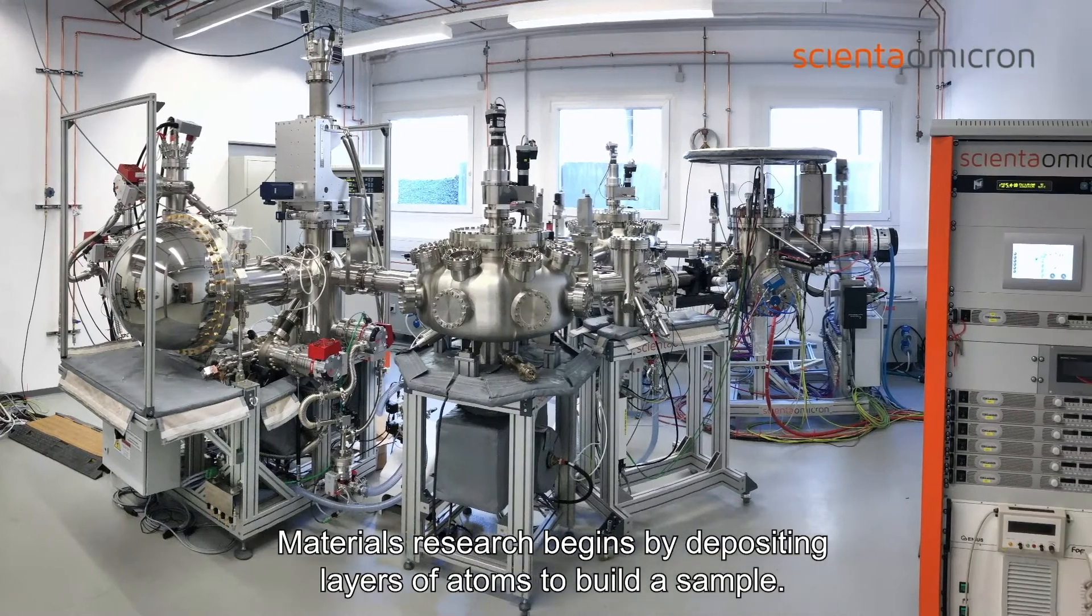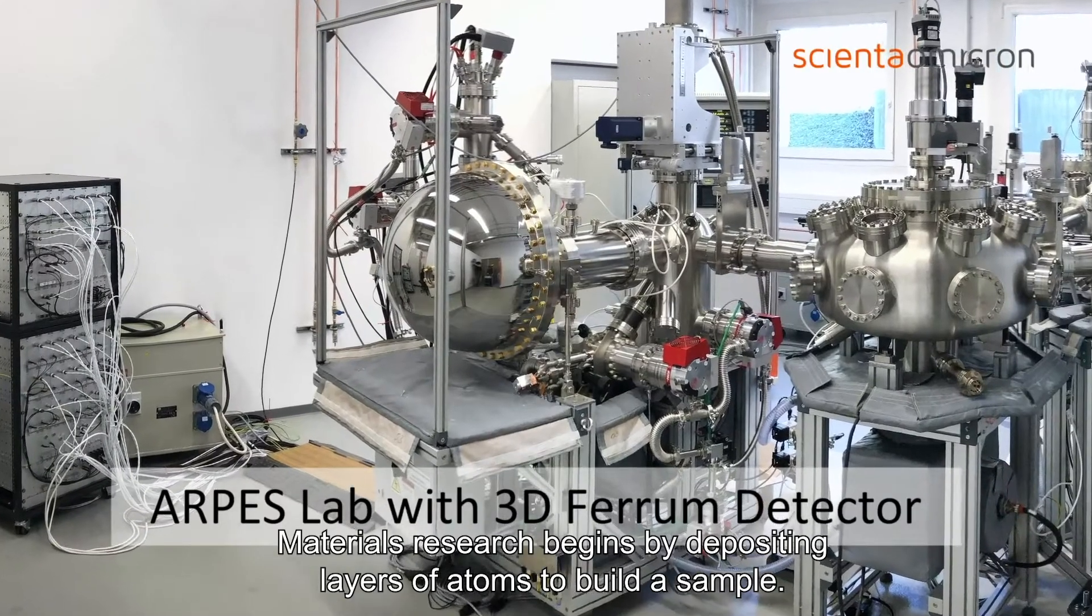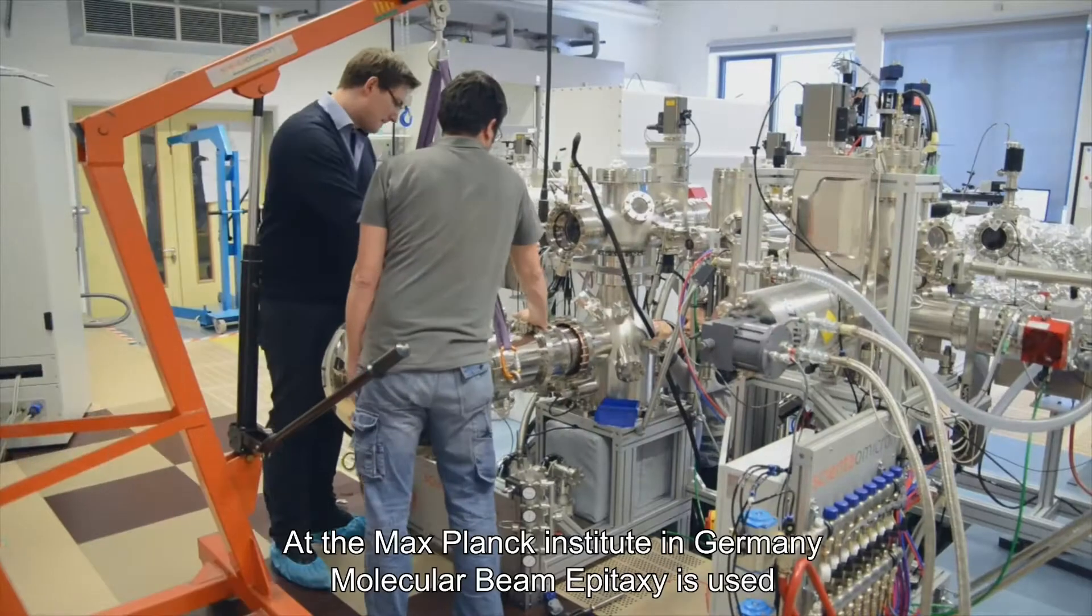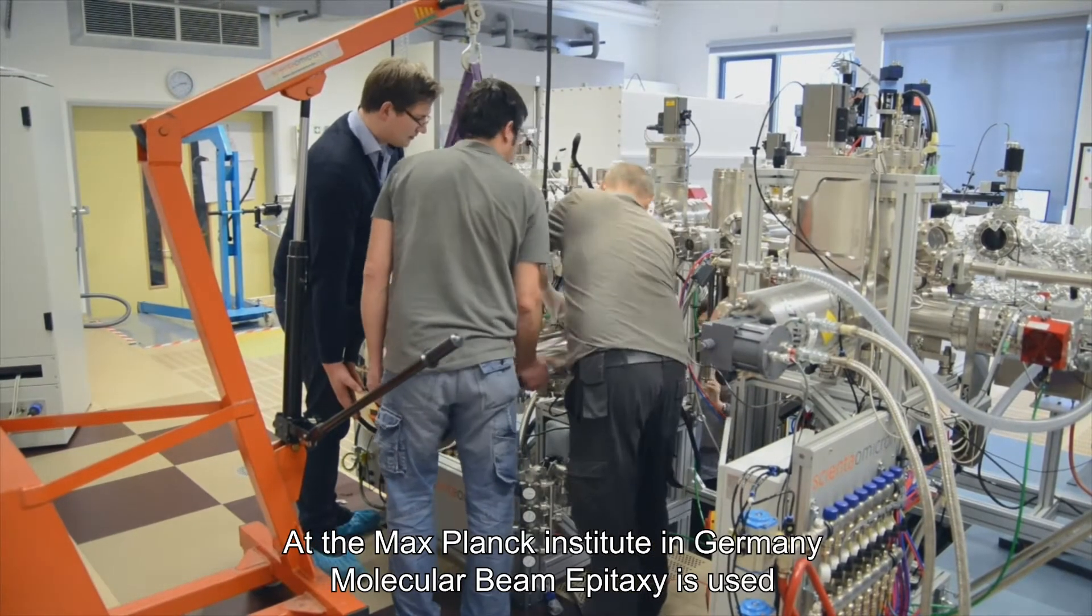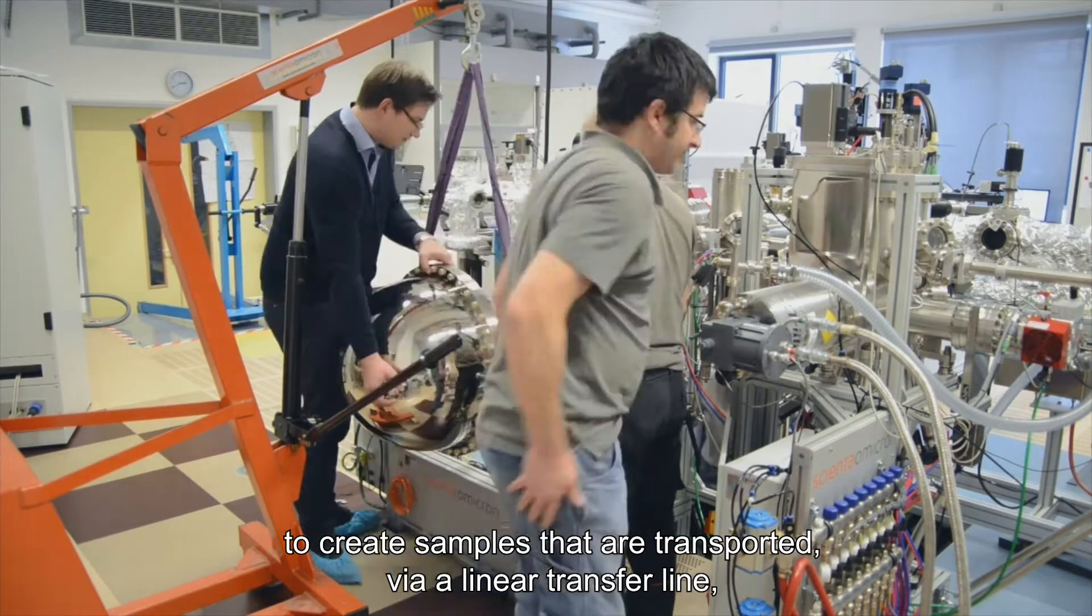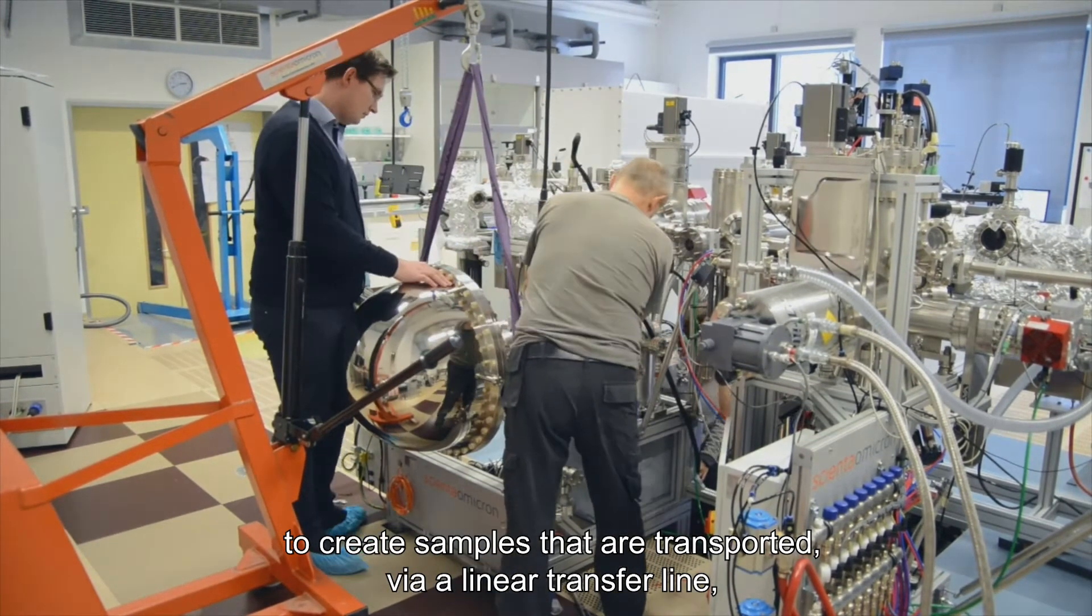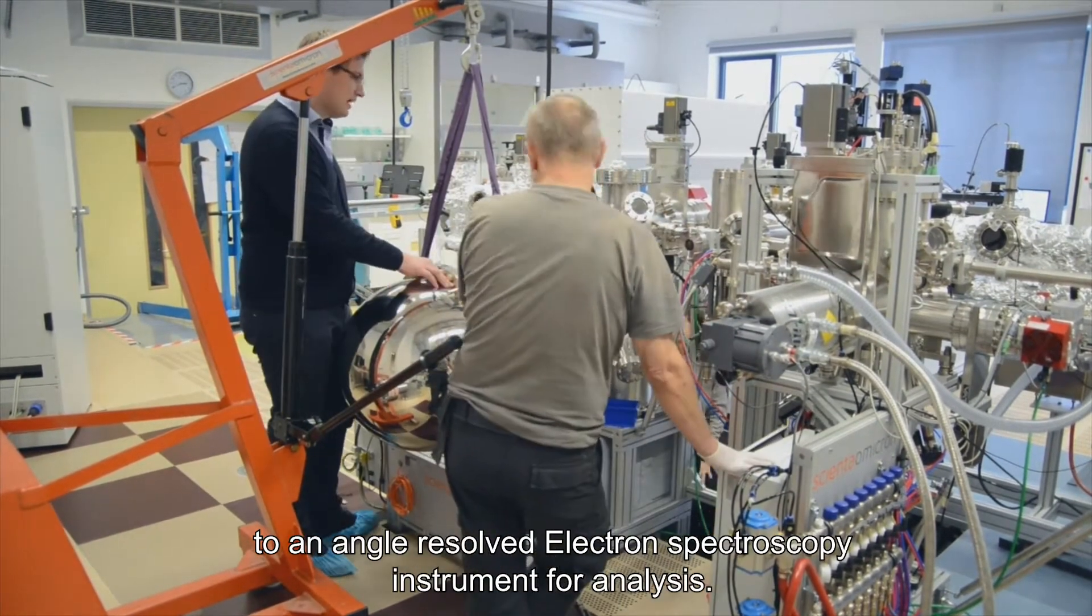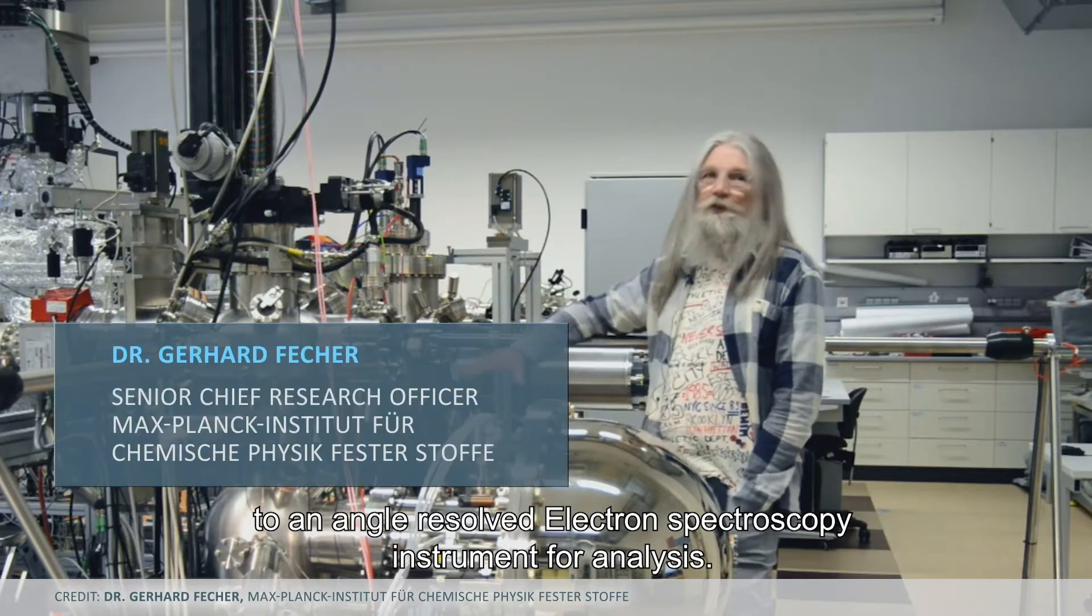Materials research begins by depositing layers of atoms to build a sample. At the Max Planck Institute in Germany, molecular beam epitaxy is used to create samples that are transported via linear transfer line to an angle-resolved electron spectroscopy instrument for analysis.